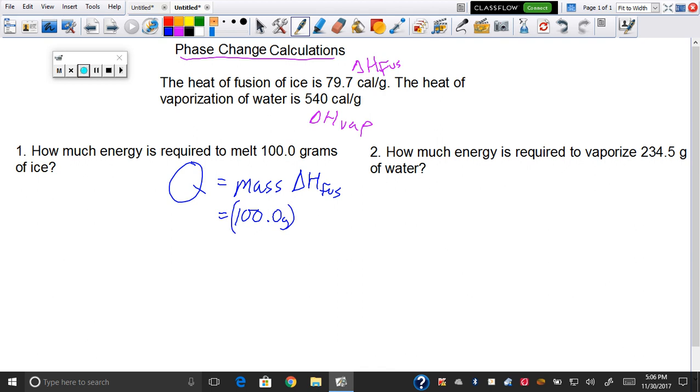Delta H of fusion is 79.7 calories per gram. What happens to the grams? The grams will cancel. So 100 times 79.7 equals 7,970 calories.